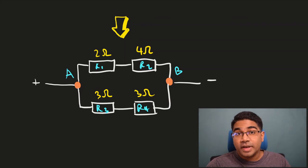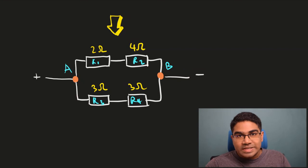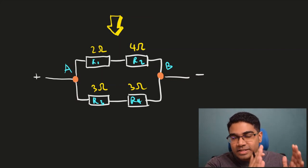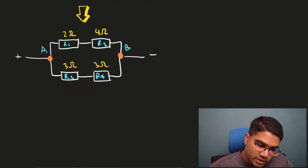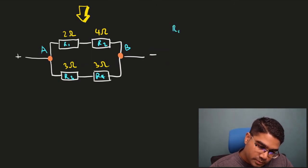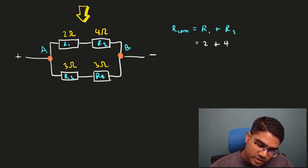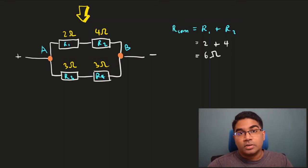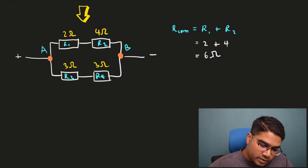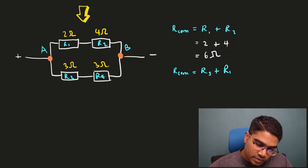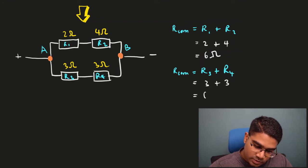Once we have this clearer diagram, it is fairly simple. This is a combined circuit with resistors connected in series as well as in parallel. We combine the series resistors first. The combined resistance for R1 and R2 is R1 plus R2 = 2 + 4 = 6 ohms. The combined resistance for R3 and R4 is R3 plus R4 = 3 + 3 = 6 ohms, since they are connected in series.